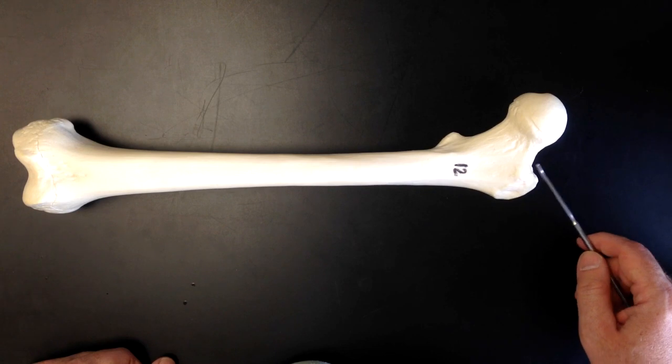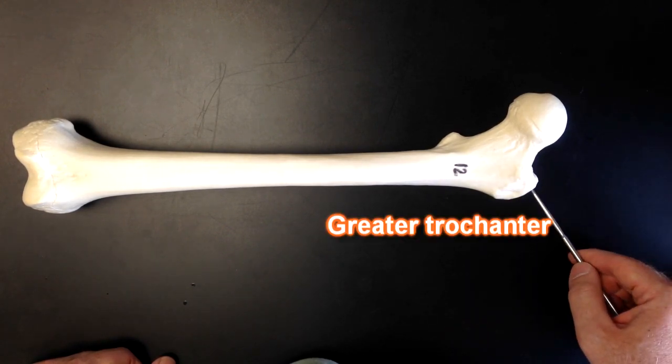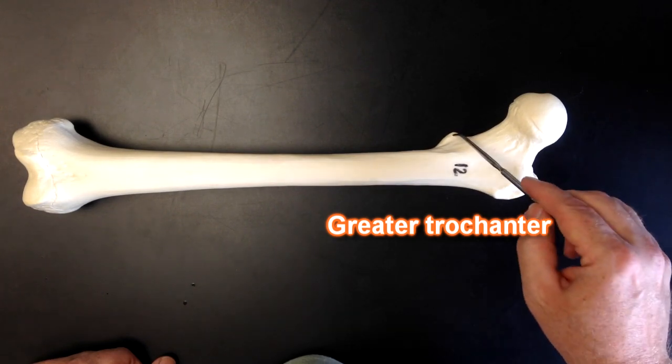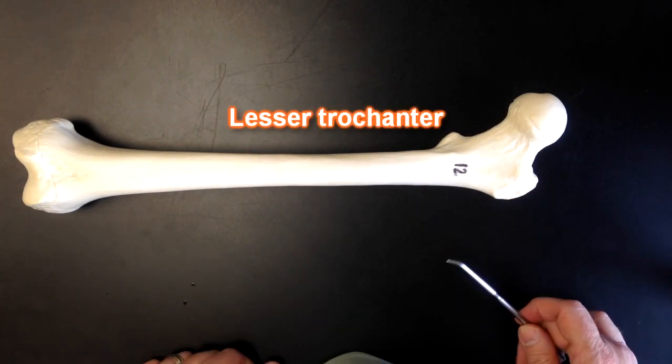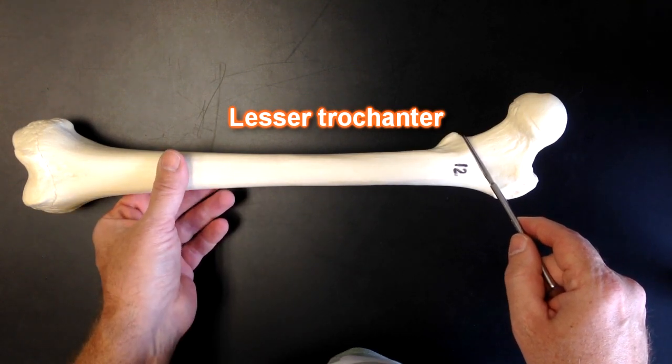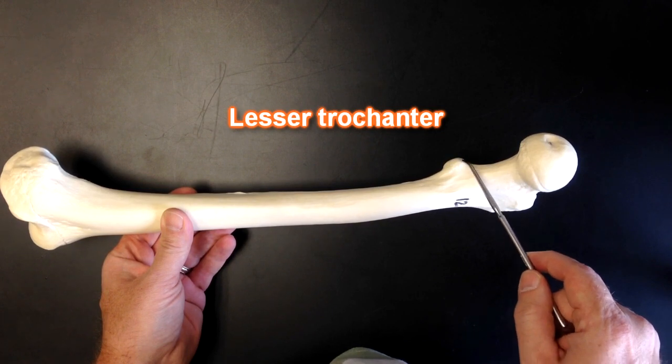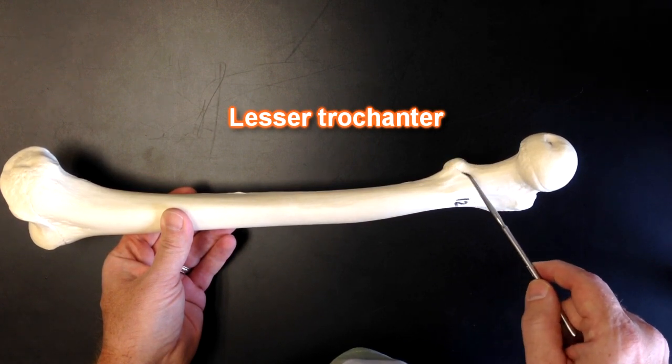Over in this direction right here on the lateral aspect we've got the greater trochanter of the femur and then on the other side we have the lesser trochanter of the femur. Now you can notice that the lesser trochanter is a little bit more posterior so we can rotate it a little bit like this so that we can see that lesser trochanter better.